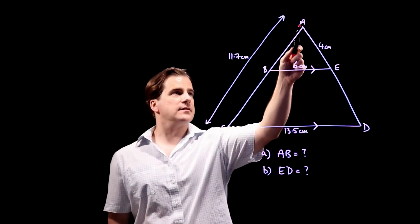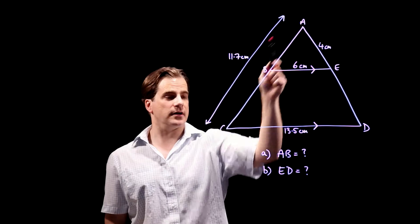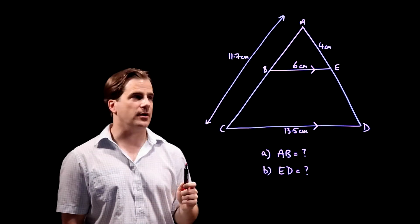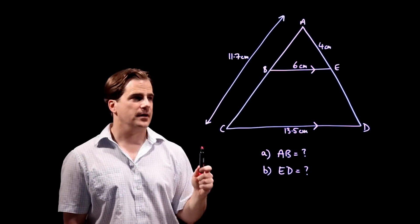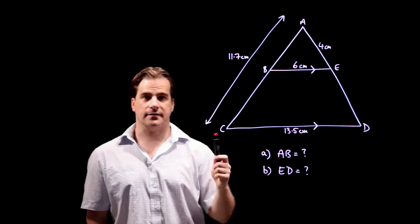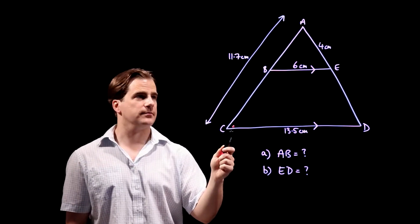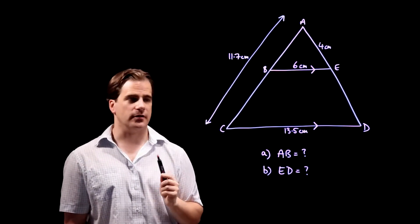It means that the triangle ABE, the small one, and the triangle ACD, the big one, are similar. In other words, the proportions of ABE and ACD are the same, which means this is a ratios question and that's what we're going to use to solve it.